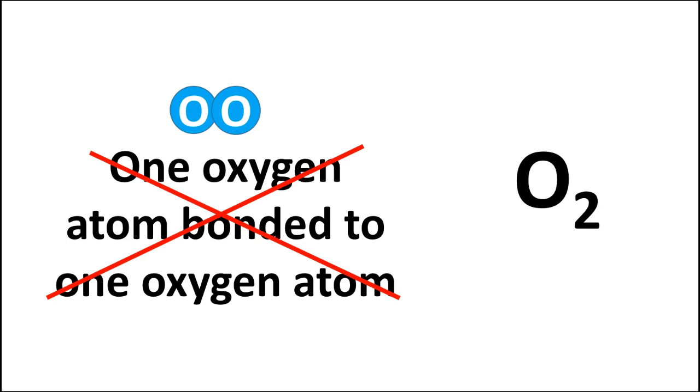The O represents oxygen, what atom, and the 2 represents how many of them there are.